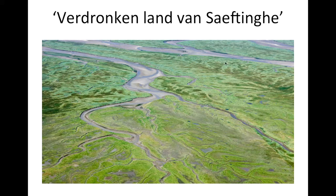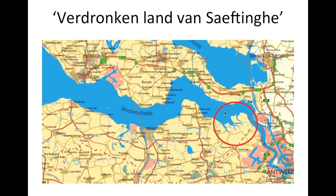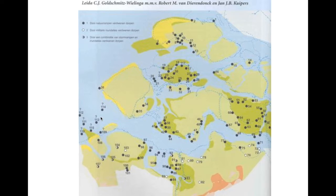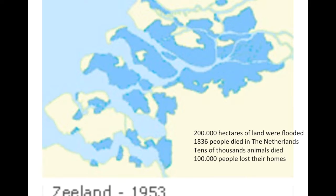Here you can see a kvelder, a tidal marsh, known as the Drowned Land of Saftingen. It's located over here — the sea came in and basically ransacked a piece of the land, and it became known as Drowned Land. The idea of Drowned Land and Drowned Villages is a very real thing in the southwest of the Netherlands, even though we haven't seen a 1953-type disaster since.